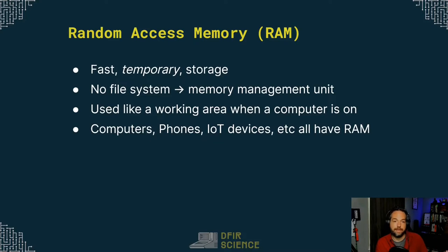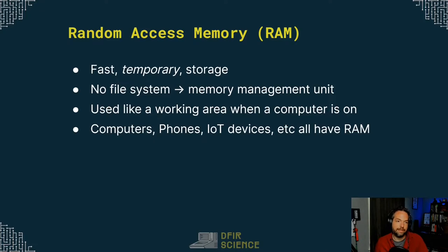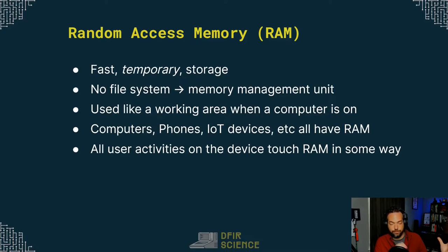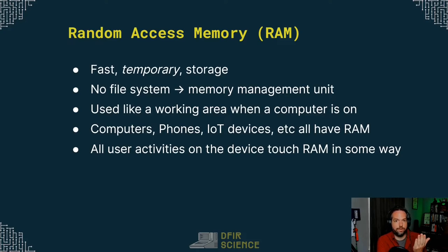It's much more difficult to access random access memory because you can only access it while the computer is on. If you shut the computer down, all of the data in RAM is going to be lost. So we do not shut the computer down when we want to access random access memory. All user activities on the device touch RAM in some way. Even this video — your device is downloading it from a server on the internet, processing it, and displaying it on screen. All of that data is going through RAM on your device.